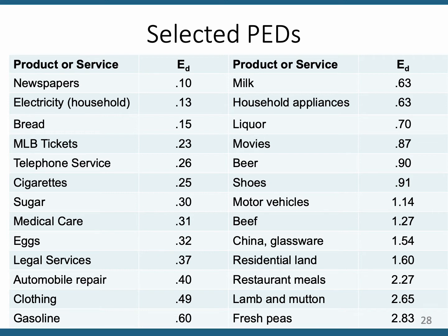Major League Baseball tickets are inelastic because there are no close substitutes — if you're a Phillies fan and the price doubles, you're not going to a Mets game. You're brand loyal. Cigarettes are inelastic because of their addictive qualities. Legal services — when you need a lawyer, you need a lawyer. Automobile repair, same argument. Gasoline and clothing are necessities, and clothing is broadly defined.